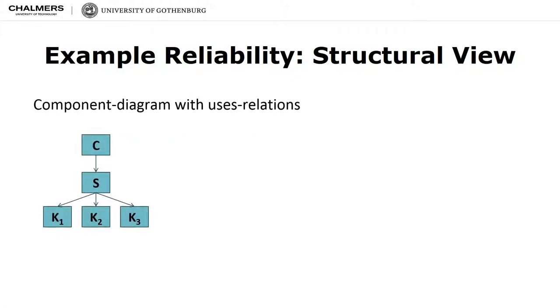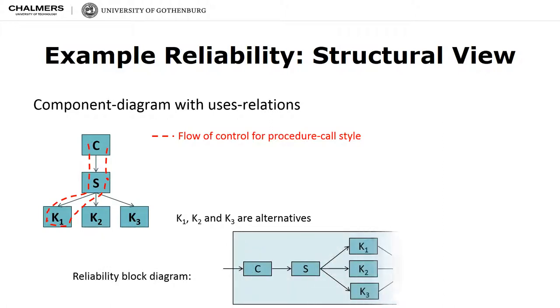Here is another example for reliability based on the structural view. We consider again a system composed of five components, arranged as on the slide. However, in this example, we suppose that K1, K2 and K3 are alternatives to each other. But also, the flow we consider must pass through components C and S, as illustrated through the red dotted line as a control flow through the system. Therefore, the corresponding RBD consists of all components C and S in sequence, followed by the parallel or alternative composition of K1, K2 and K3. A reliability block diagram is not correct unless there is a complete flow from start on the left, typically, to the output on the right. So, the diagram must show how the outputs of K1, K2 and K3 are combined.